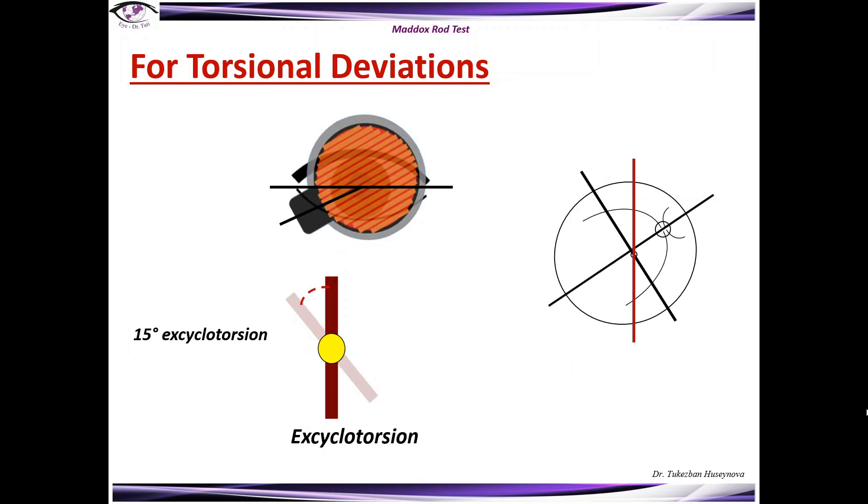And here you just ask the patient to turn the Maddox rod counterclockwise which will place the red line vertically. And this way you measure the degree of torsion. And in our image for example we can see a 15 degree excyclotorsion.